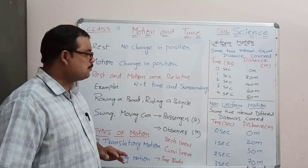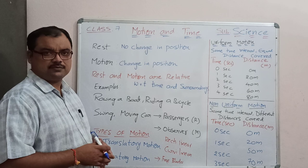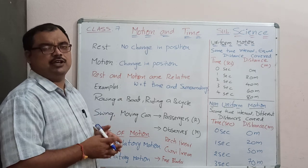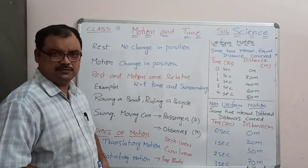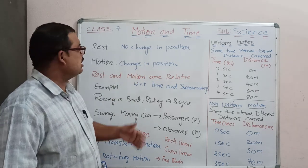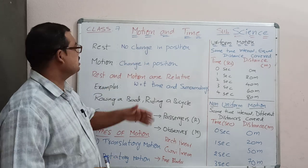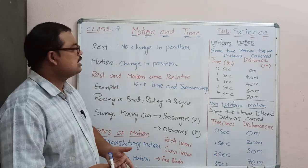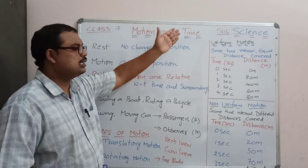Now today in this session we are entering into another lesson in our 7th class science syllabus. This is in your textbook the 4th lesson. The lesson is Motion and Time.